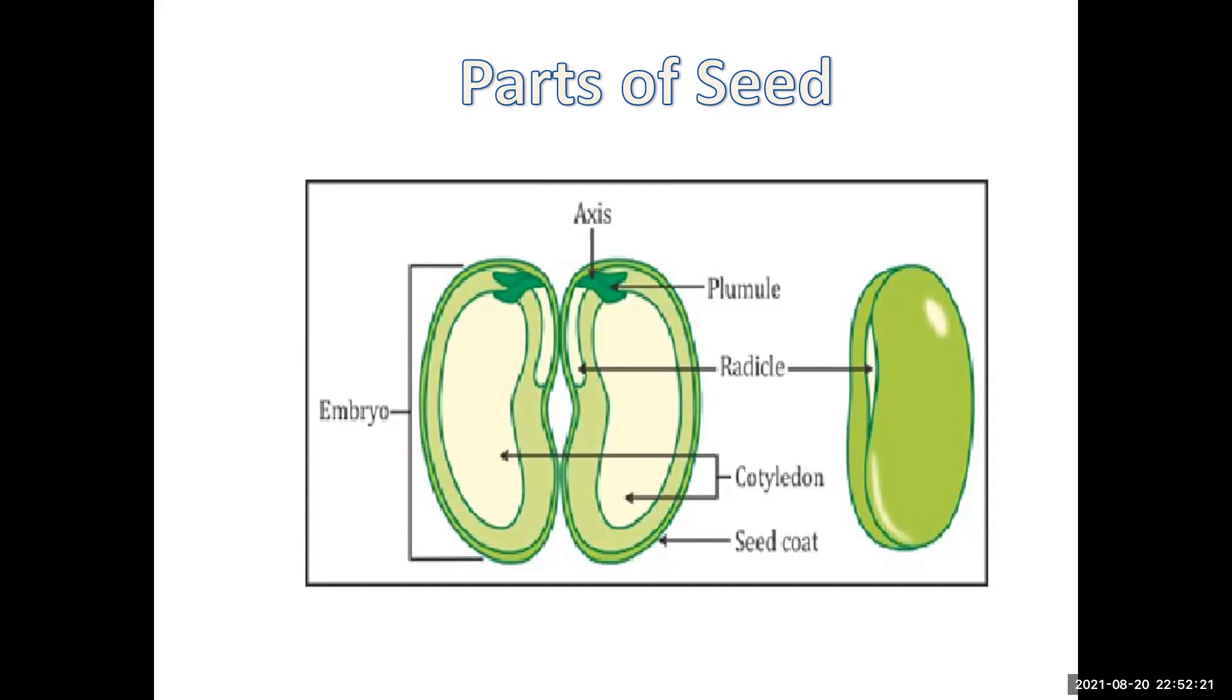The baby plant, also known as an embryo, has an upper part called plumule, which is going to form the future shoot.